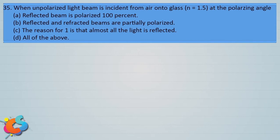When an unpolarized light beam is incident from air onto glass of refractive index 1.5 at the polarizing angle, options: a) reflected beam is polarized 100 percent, b) reflected and refracted beam are partially polarized, c) the reason for a is that almost all light is reflected, and d) all of the above.